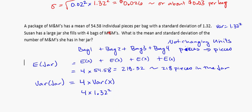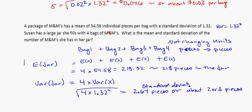And to get back to the standard deviation we'll end up taking the square root of that as well. So if we go ahead and do that all in one step, the square root of the variance of the combined random distribution will get us to the standard deviation 2.64, or if we round about 2 or 3 pieces. And that's again the standard deviation for the number of pieces in the jar.